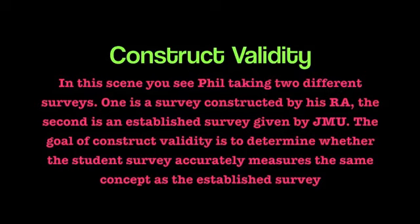Construct Validity. In this scene, you see Phil taking two different surveys. One is a survey constructed by his RA, and the second is an established survey given by JMU. The goal of Construct Validity is to determine whether the student survey accurately measures the same concept as the established survey.